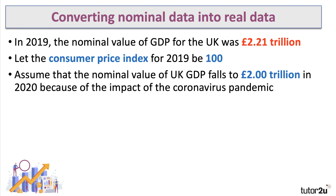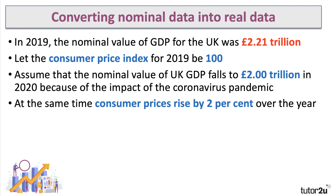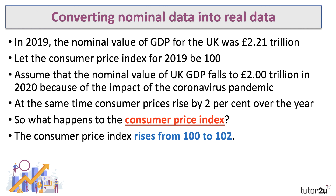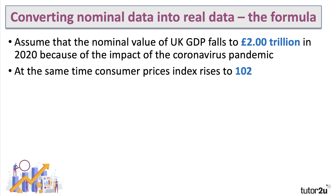Now let's assume the nominal value of GDP goes down in 2020 because of the pandemic — we shave 0.21 trillion off the nominal value due to lockdown and shutdown of large parts of the economy. We're also going to assume that at the same time consumer prices go up by two percent over the year. That means the consumer price index will rise from 100 to 102.